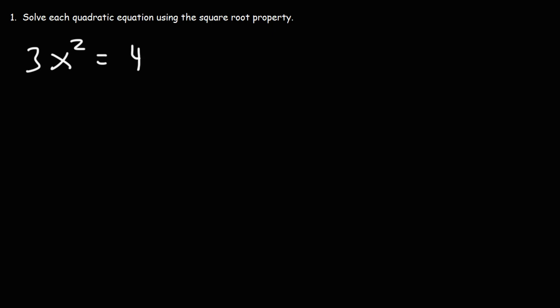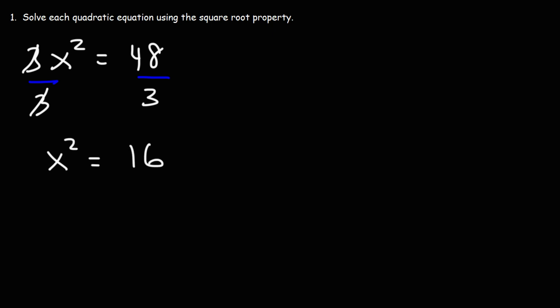3x squared is equal to 48. So what can we do here? The first thing we can do is try to get x by itself, and we could do that by dividing both sides by 3. 3 divided by 3 is 1, and 48 divided by 3 is 16.